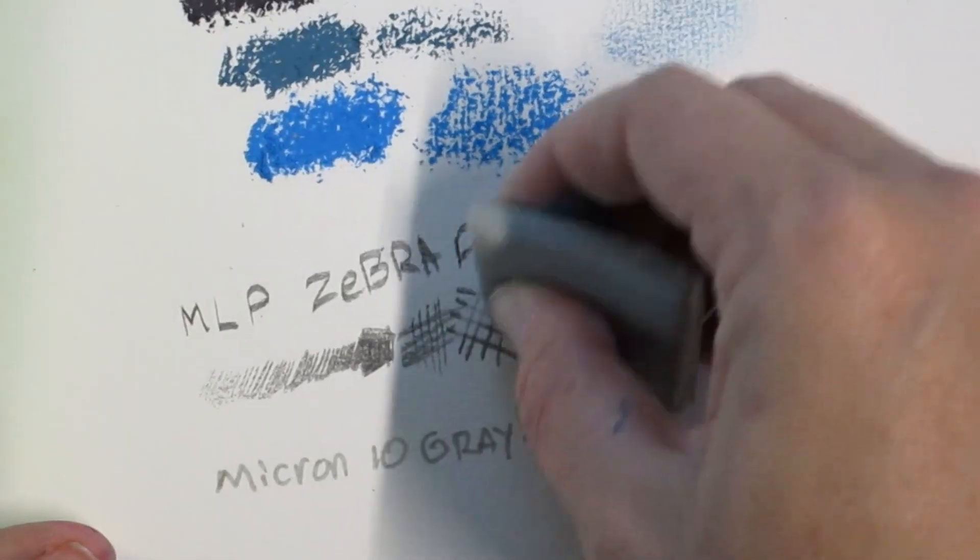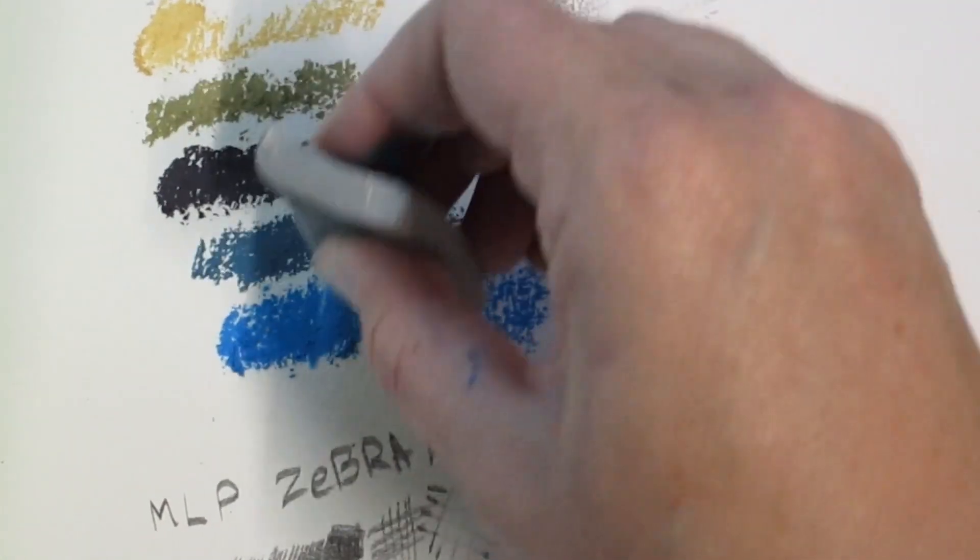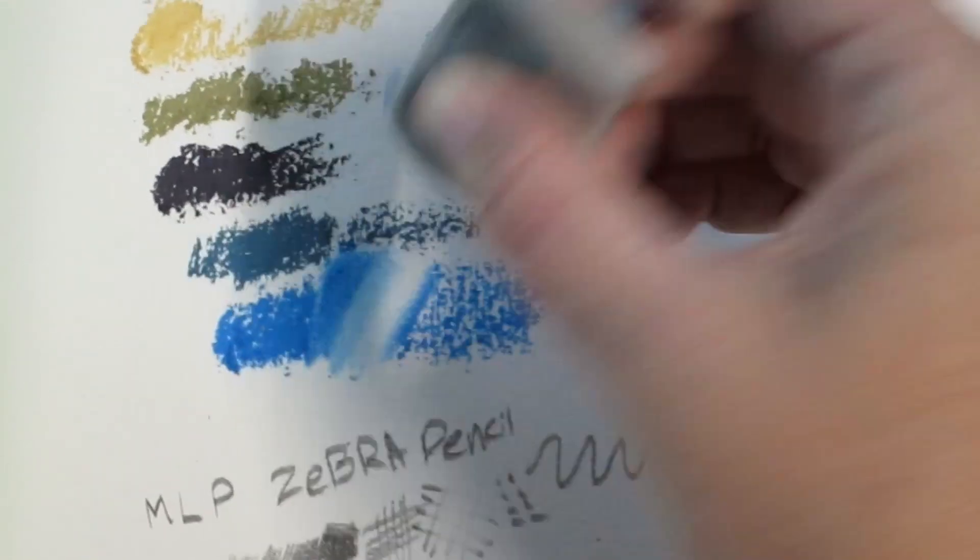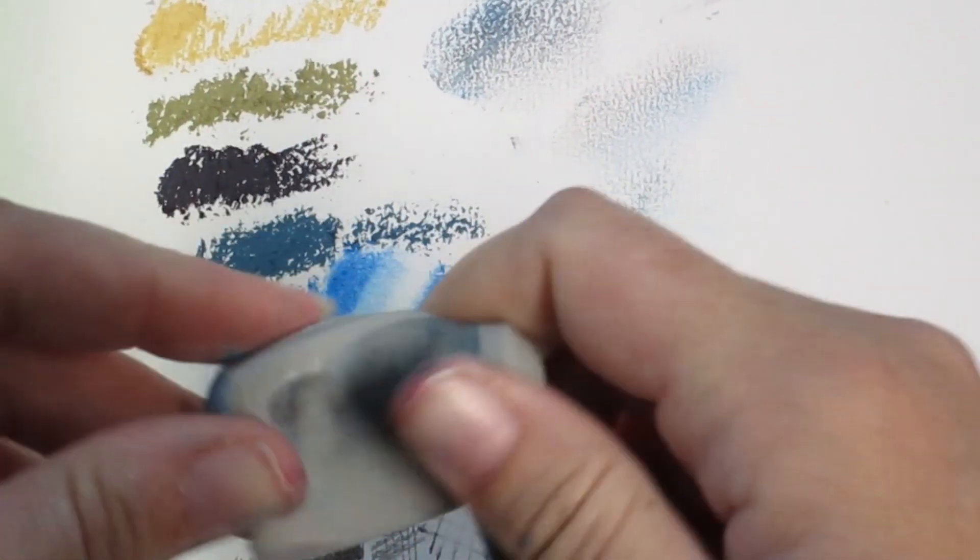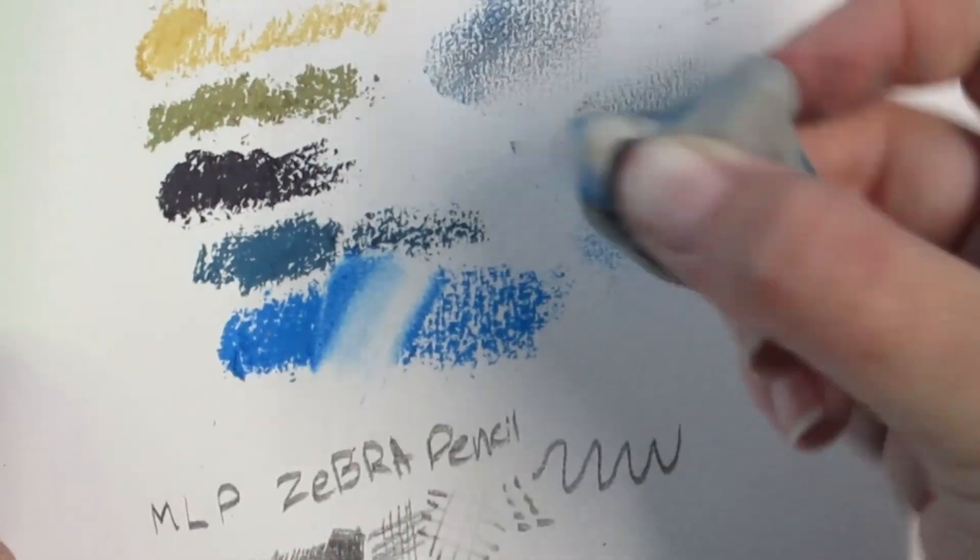Alright, it works like a regular kneaded eraser, does not erase pen. Ooh is that working? Oh that is kinda working, working kinda well. Now I could use this in my drawing or whatever I decide to do with this.